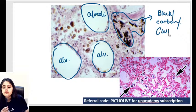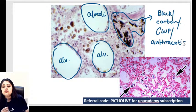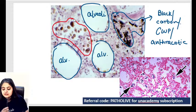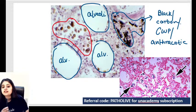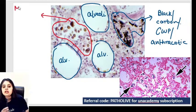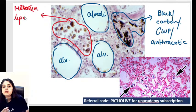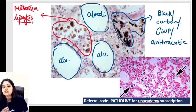You thought of coal workers' pneumoconiosis or anthracotic pigment — I agree. But did you look at the other side of the picture? There are cells that are brown in color. Let's think about brown color pigments: melanin — not relevant in lungs; lipofuscin — that's an old-age pigment, and no age was mentioned.